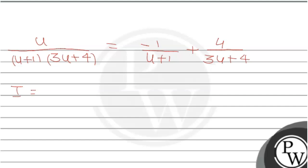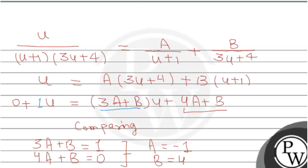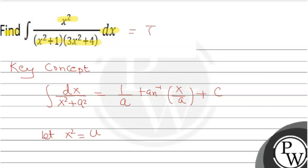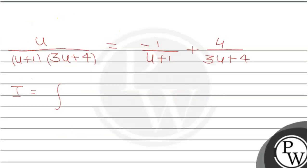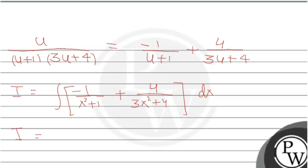Now we write I = ∫ [-1/(x²+1) + 4/(3x²+4)] dx. Separating the integral: I = -∫ 1/(x²+1) dx + ∫ 4/(3x²+4) dx. From the second term, we factor out 3 to get the standard form: 4/3 · ∫ 1/(x² + 4/3) dx.